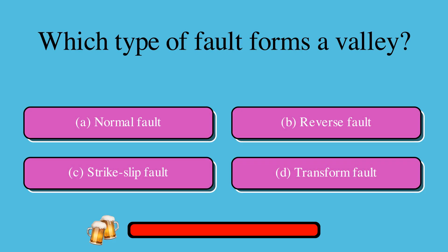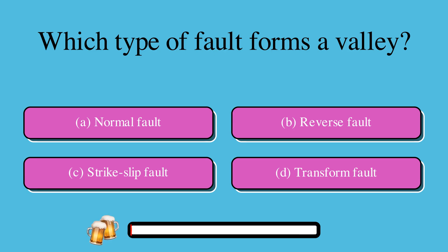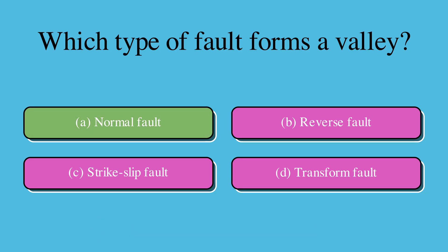Which type of fault forms a valley? A. Normal fault, or B. Reverse fault, or C. Strike-slip fault, or D. Transform fault? The correct answer is A. Normal fault.